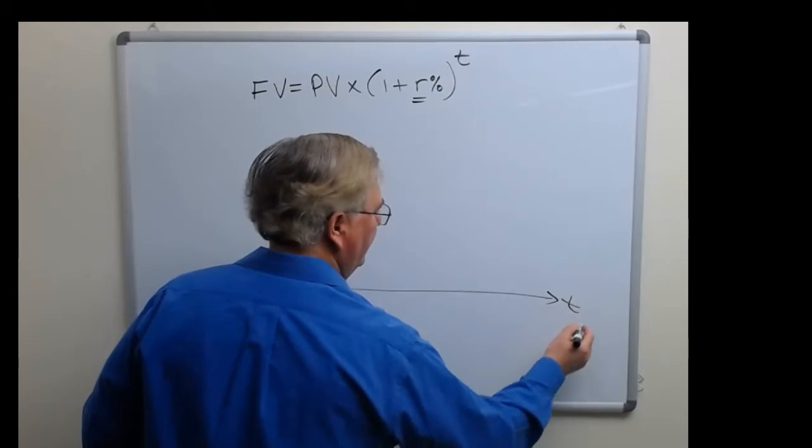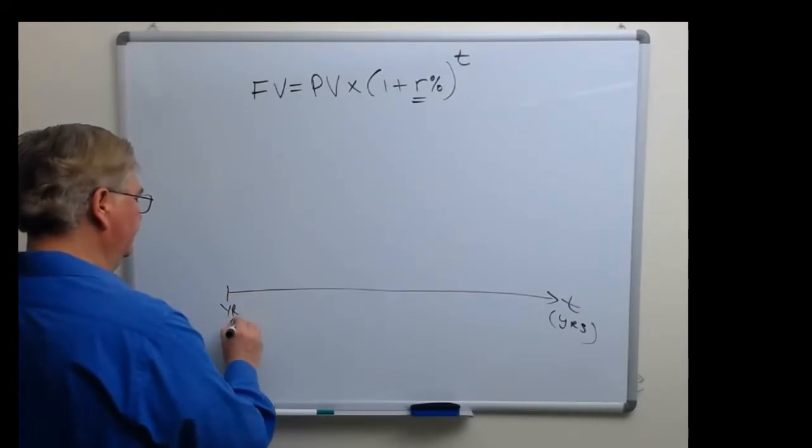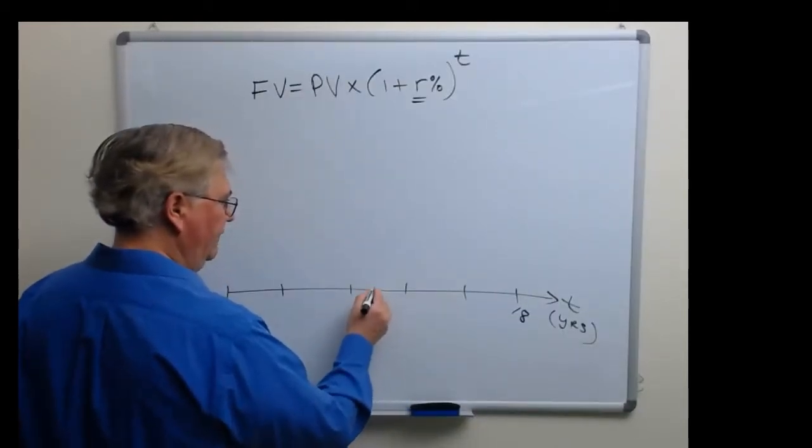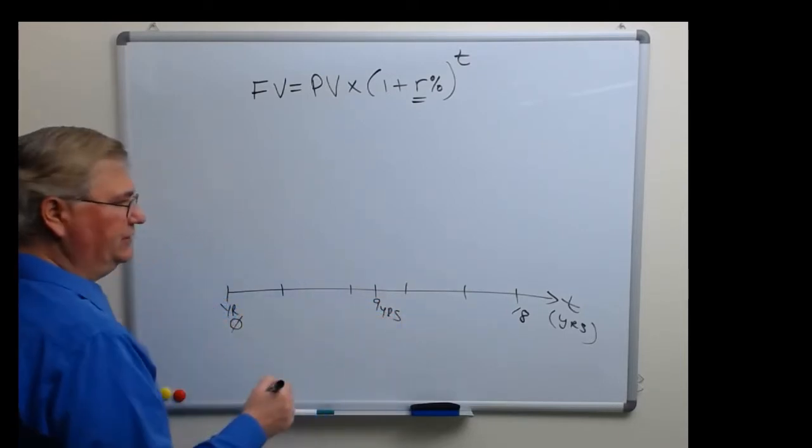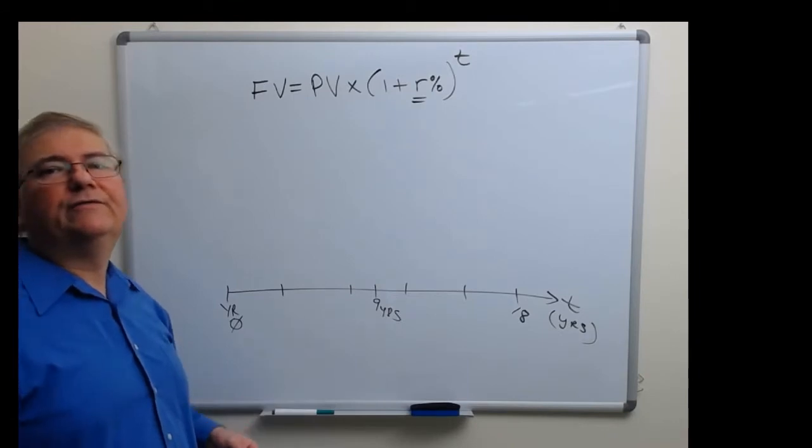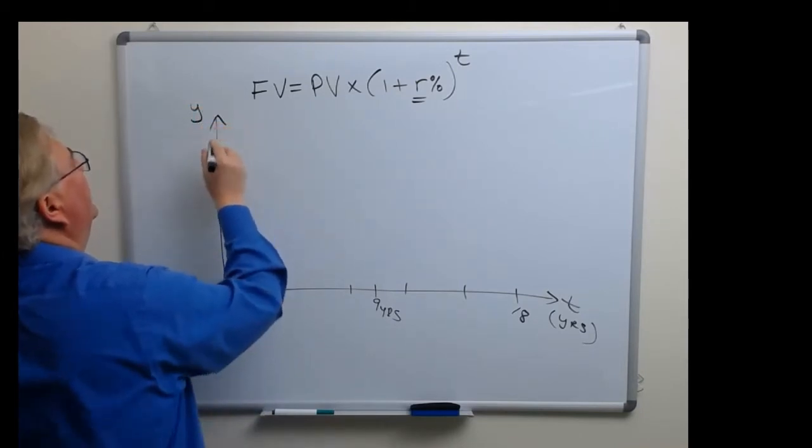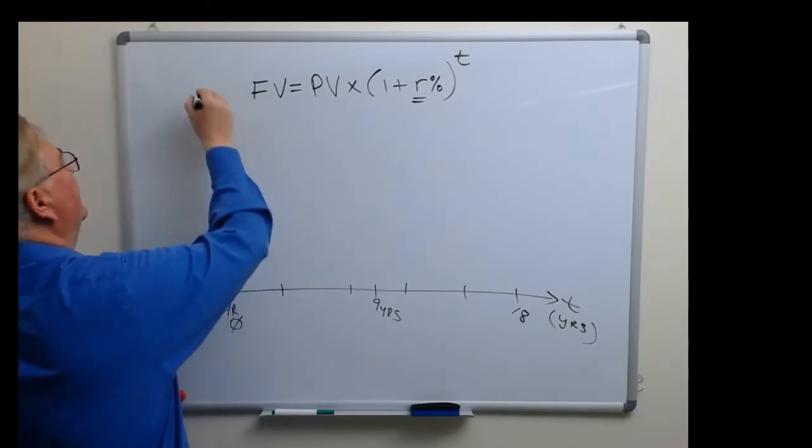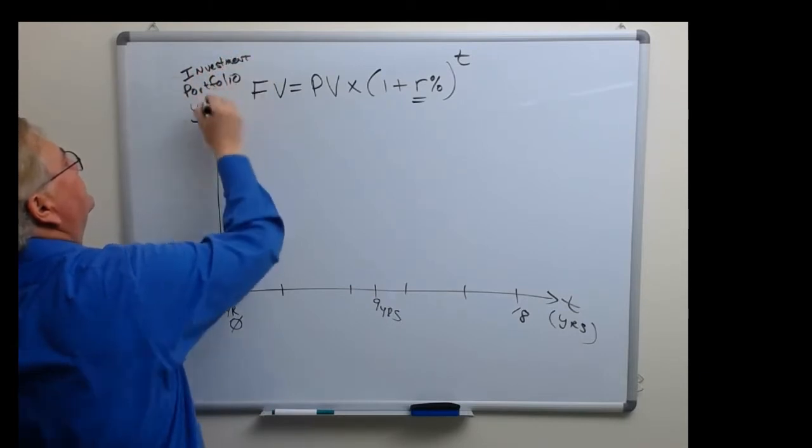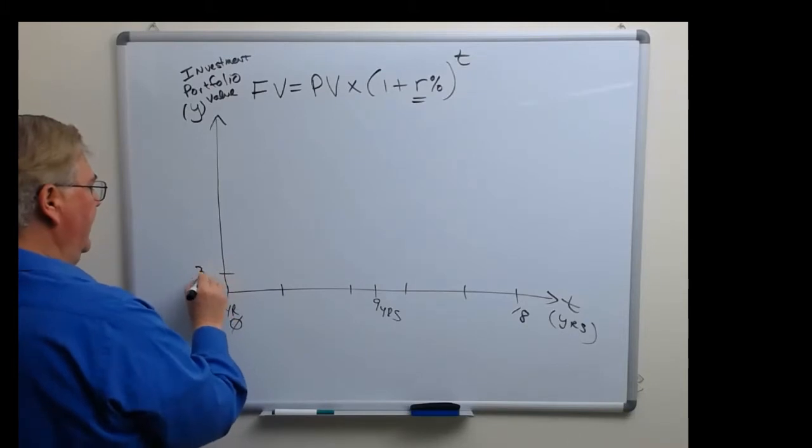So if we draw out an x-axis here for time in years, and we're starting out at year zero and we're assuming that Samantha matriculates into college 18 years from now, well then this would be like the halfway point nine years, and this is year zero. Let's say the grandparents, the Butterfields, are setting aside something like thirty thousand dollars for their granddaughter's education. So we have here on this y-axis the value of the portfolio, the investment portfolio value. That's our y-axis and we're starting out at thirty thousand, 30k.